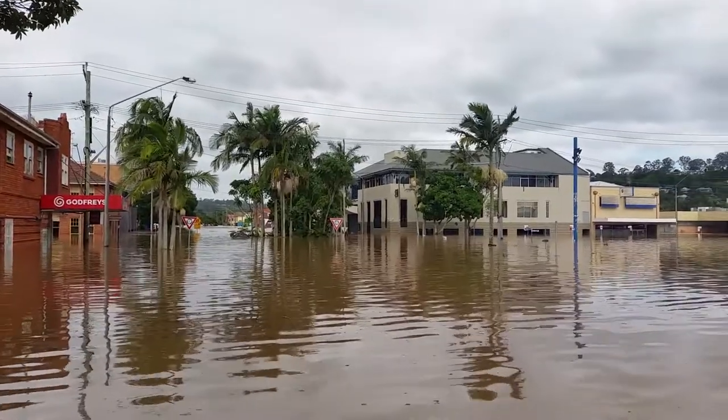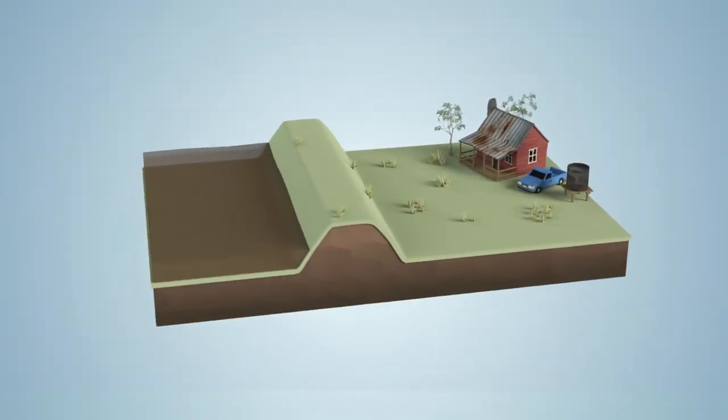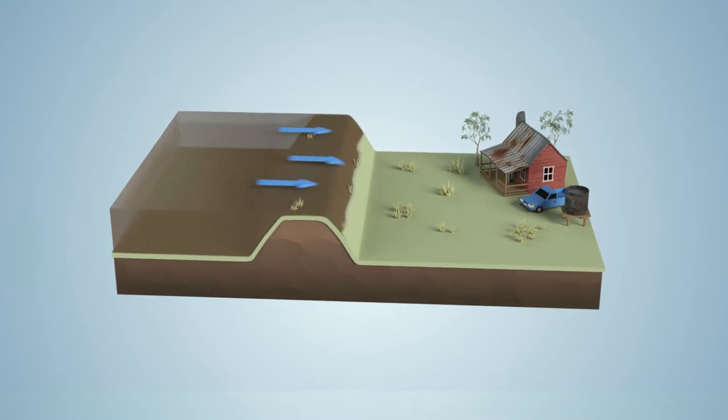Levees are not always able to protect an area from flood water. When flood water goes over the crest of the levee, this is called overtopping.